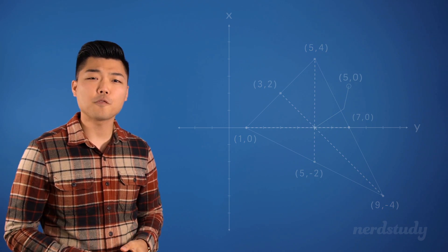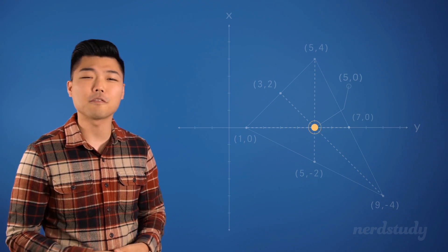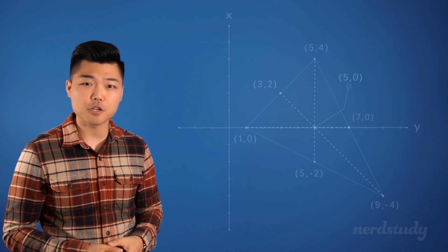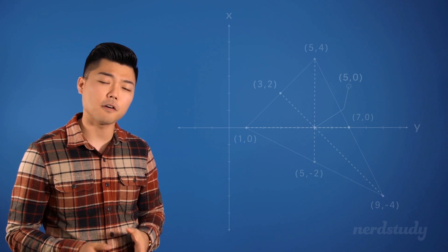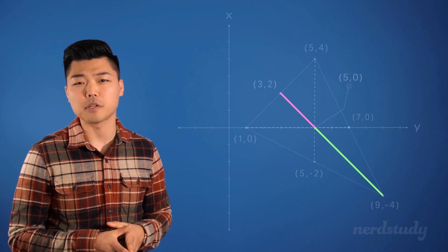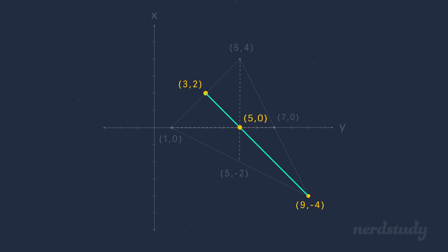So far we have discovered the midpoints, medians, and the centroid of this triangle. Now let us explore further and try to verify that the length of one segment is half the length of the other. To verify this, we've got these two distances that we need to measure. The only info we really need for now are these coordinates and this median line, and we can forget about everything else for now.